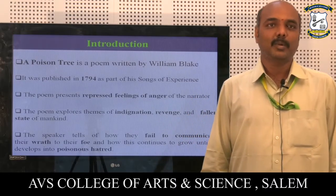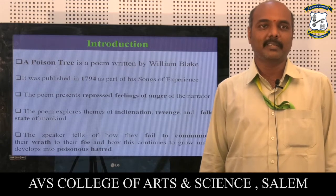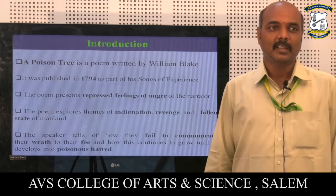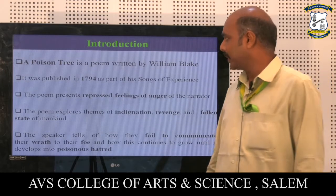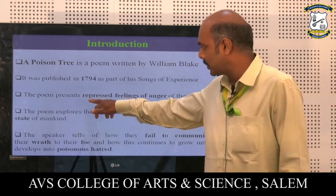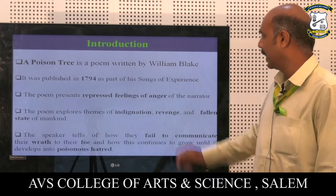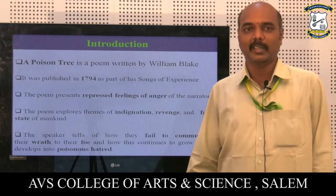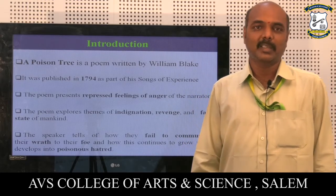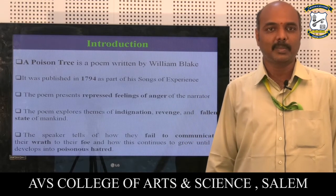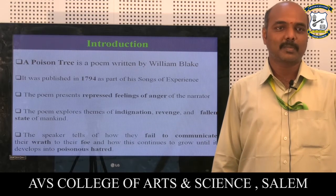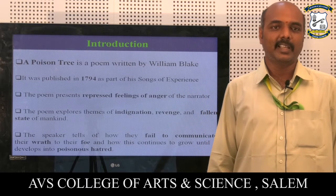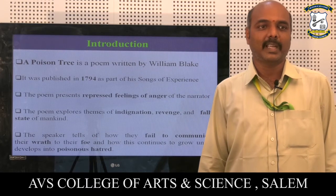A Poison Tree is a poem written by William Blake. It was published in 1794 as part of his Songs of Experience. The poem represents repressive feelings of anger of the narrator, or the speaker, or the poet. The poem explores various themes like indignation, revenge, and the fallen state of mankind.